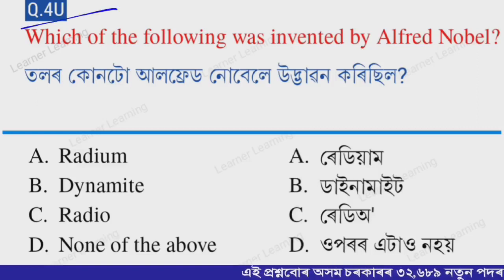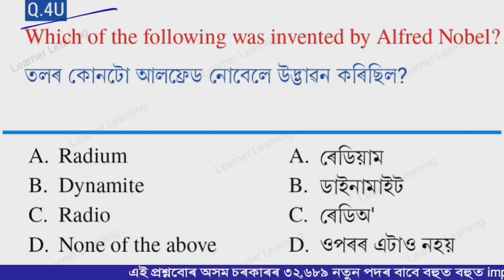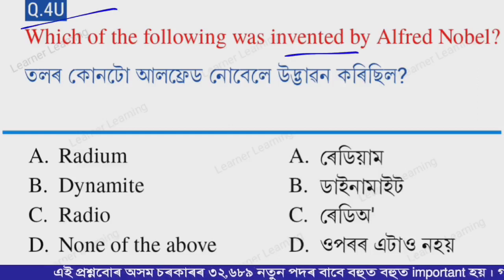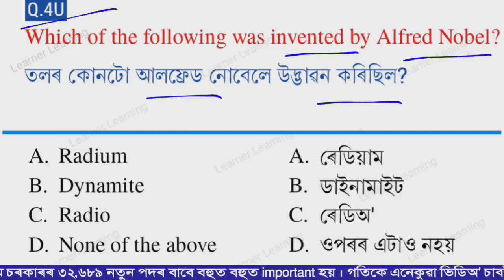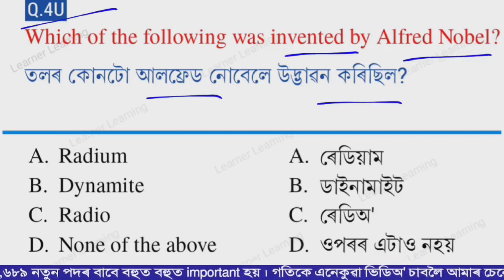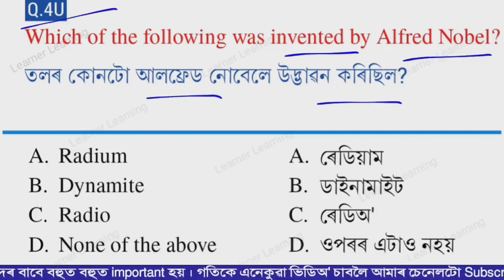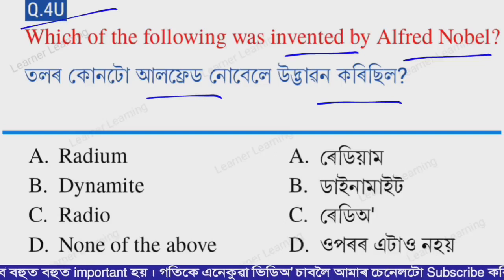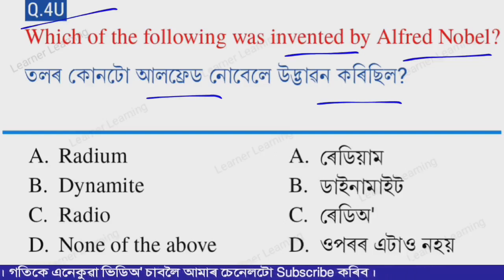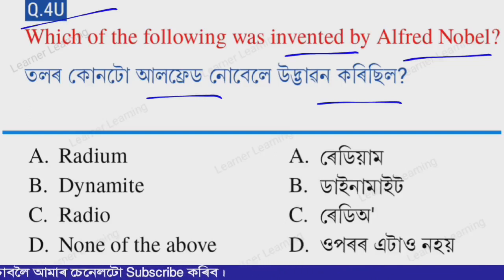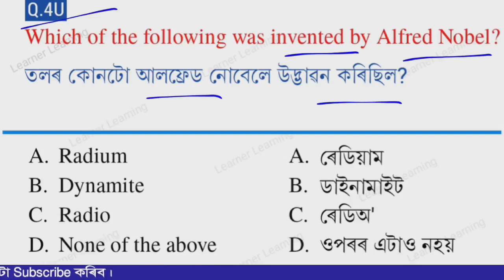Question for you — please comment your answer in the comment box. Which of the following was invented by Alfred Nobel? Options: A — Radium, B — Dynamite, C — Radio, D — None of the above. What is the correct option? Please comment your answer in the comment box.